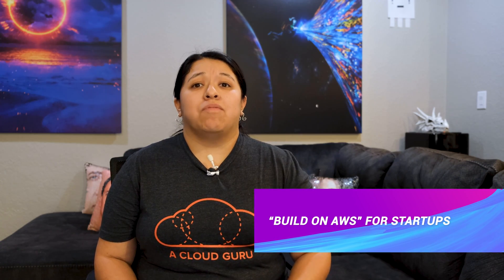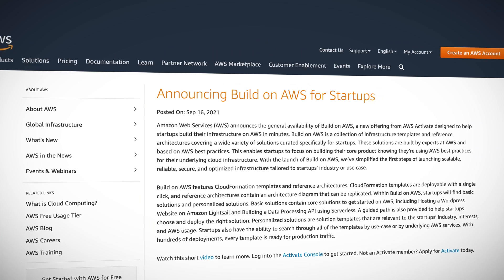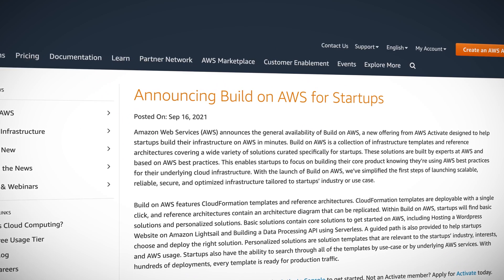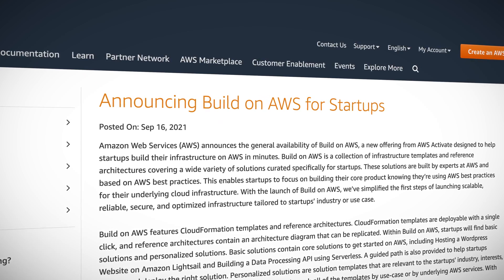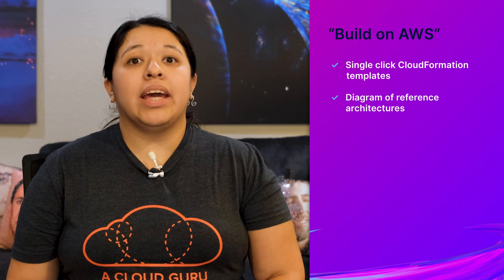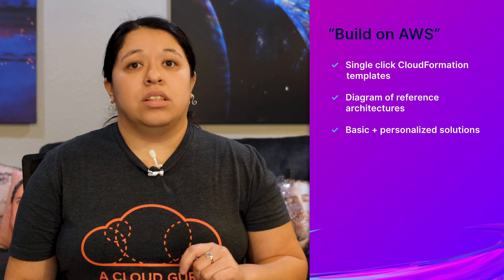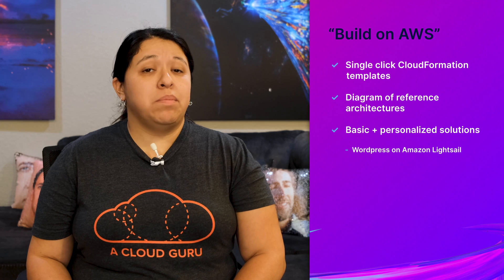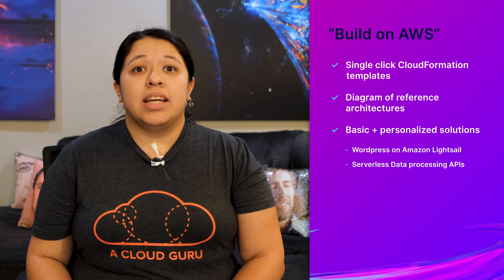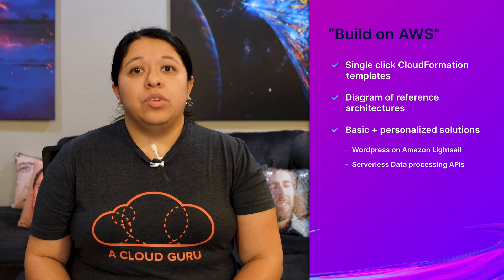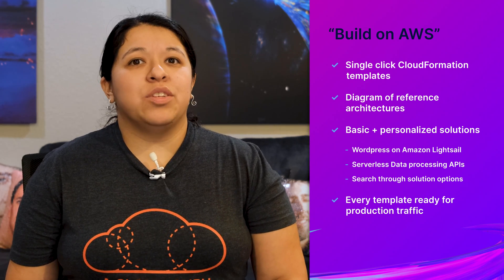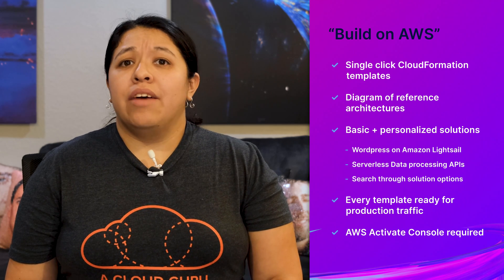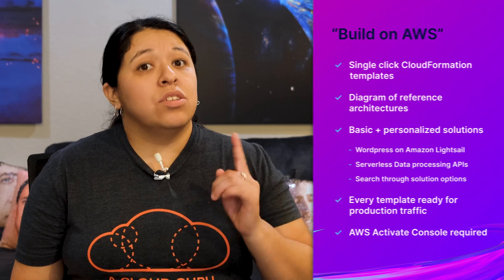Build on AWS will change the game for startups. This new offering is a collection of infrastructure templates and architectures covering a variety of solutions built by experts at AWS to meet AWS best practices, and are geared specifically at startups. CloudFormation templates are deployable with a single click, and reference architectures contain a diagram that can be replicated. There are basic and personalized solutions. Some of the basic solutions include hosting a WordPress website on Amazon LightSail and building a data processing API using serverless options. You can search through the solution options by use case or services used. Every template is ready for production traffic. You do need to have access to the AWS Activate Console to utilize this feature, so don't forget to apply for it.